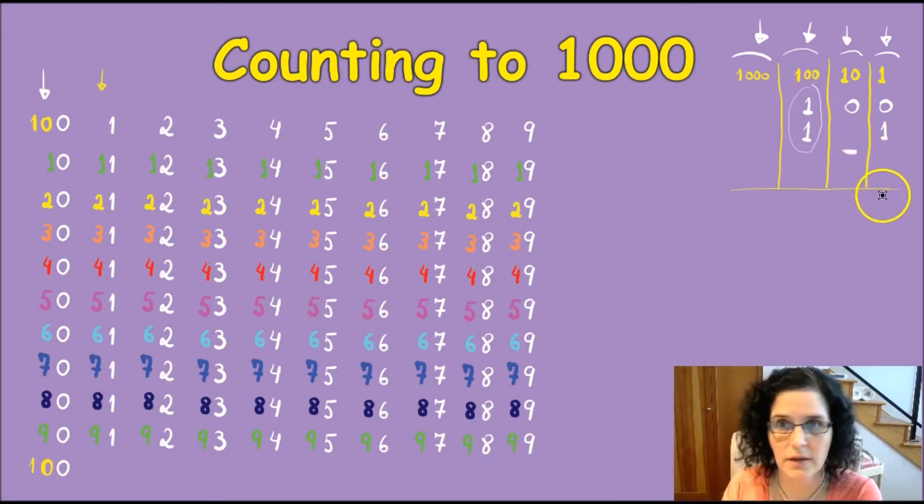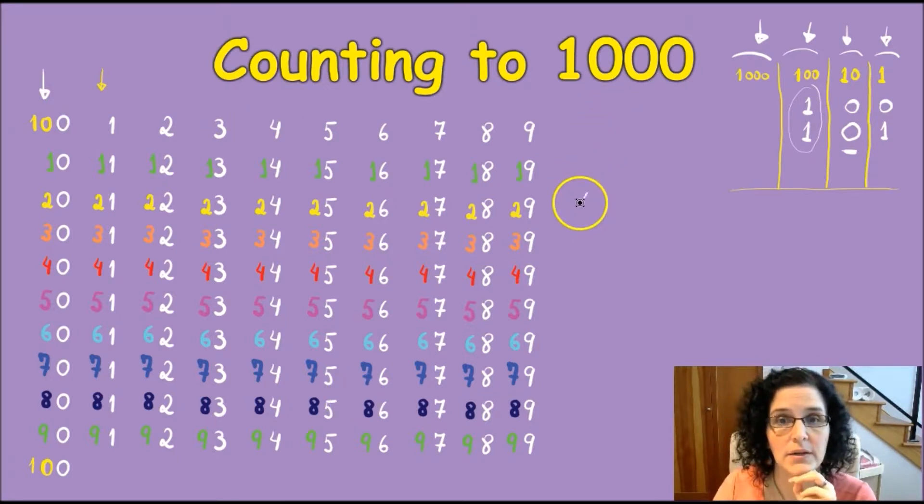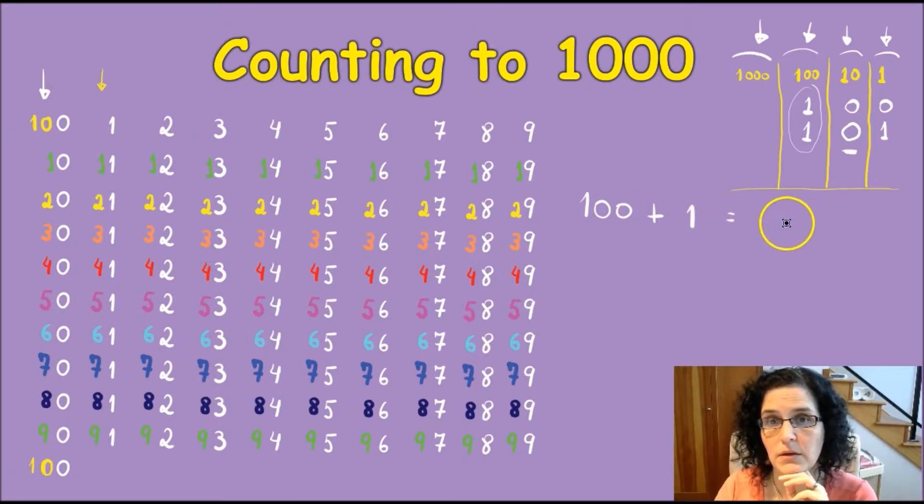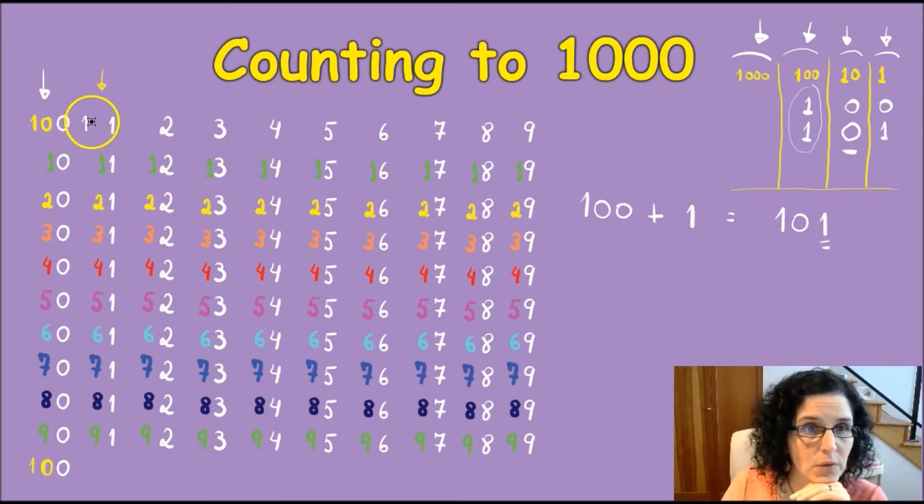But this is the thing: what do you put here then? You put a zero, because there are no groups of 10 on 101. It is basically 100 plus 1, so 100 plus 1 will be 101. You add it to the units. So here it will be like 101, 102, and so on, so forth.